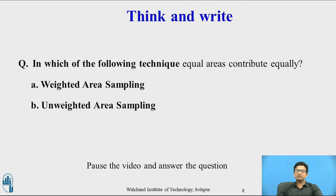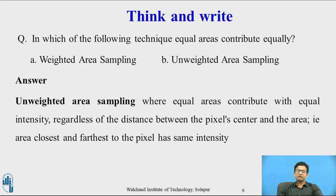Here is a question — you can pause the video to answer: In which of the following techniques do equal areas contribute equally? A) Weighted area sampling, or B) Unweighted area sampling. The answer is unweighted area sampling, where equal areas contribute equal intensity regardless of the distance between the pixel center and the area. Both pixels above and below the true line have the same intensity in unweighted area sampling.